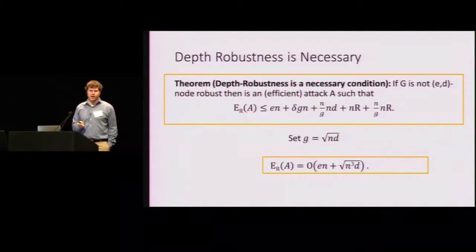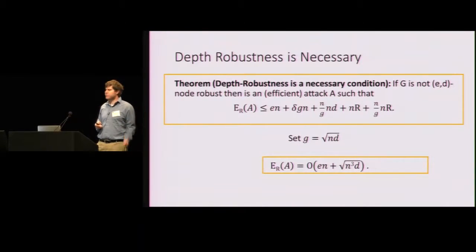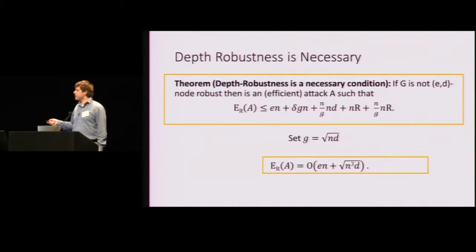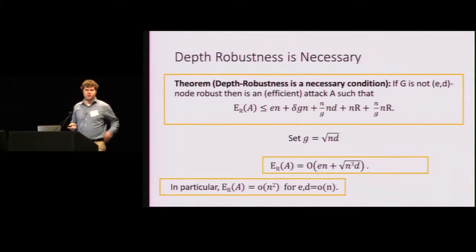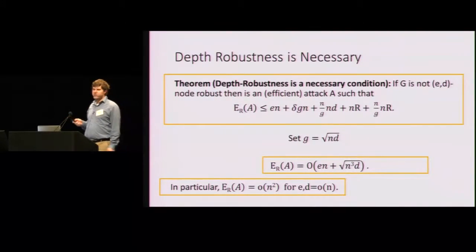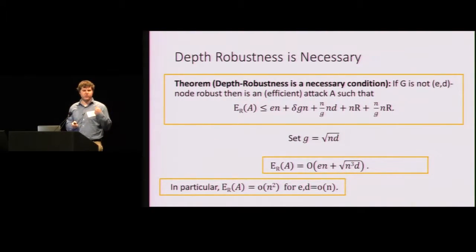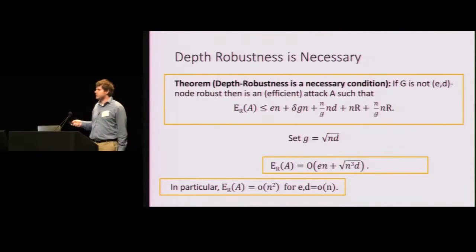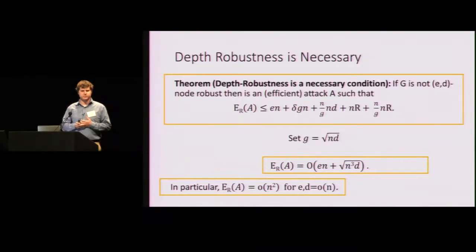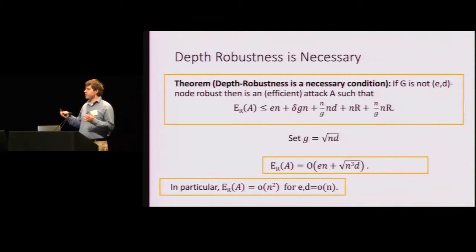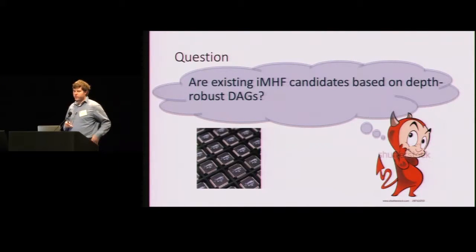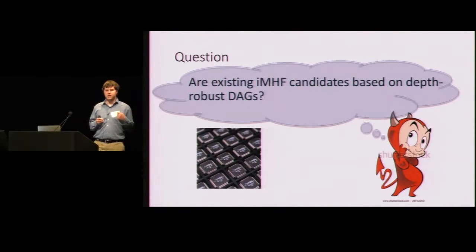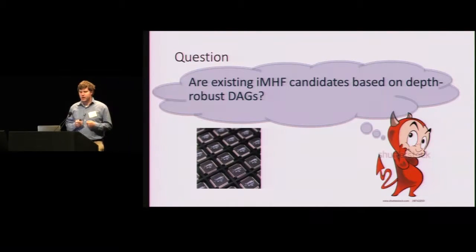So this upper bounds the cumulative space complexity. And these last two terms, just trust me, they're the cost of querying the random oracle. All right. So we have this complicated looking bound. Now if we tune parameters appropriately, we get the following energy complexity. And note in particular that if E and D are smaller than N, that this gives us an attack. This gives us an algorithm to evaluate this function with cost little o of N squared. In particular, this is bad because we want to ensure that any attack requires cost N squared.